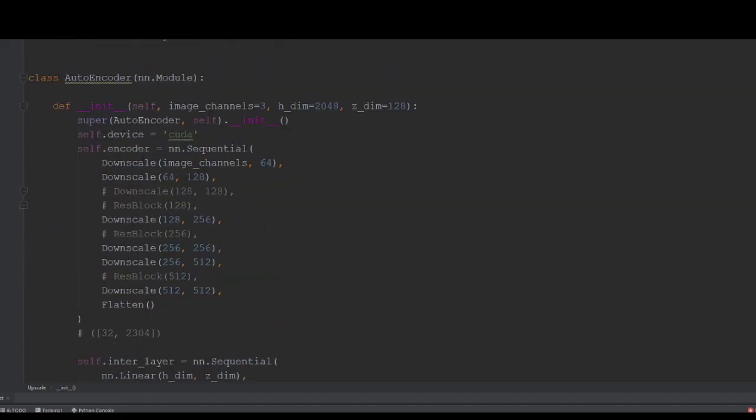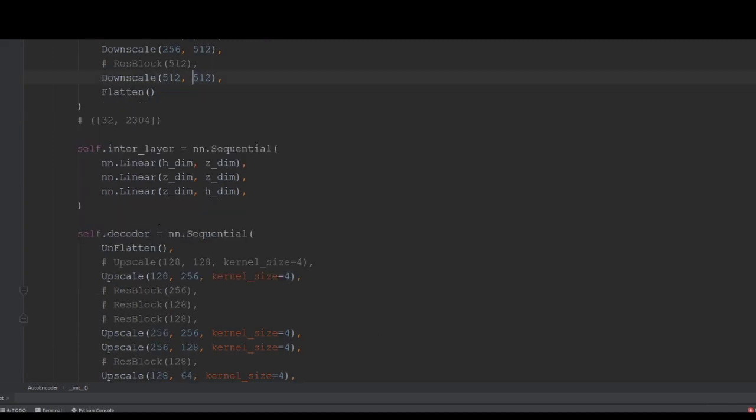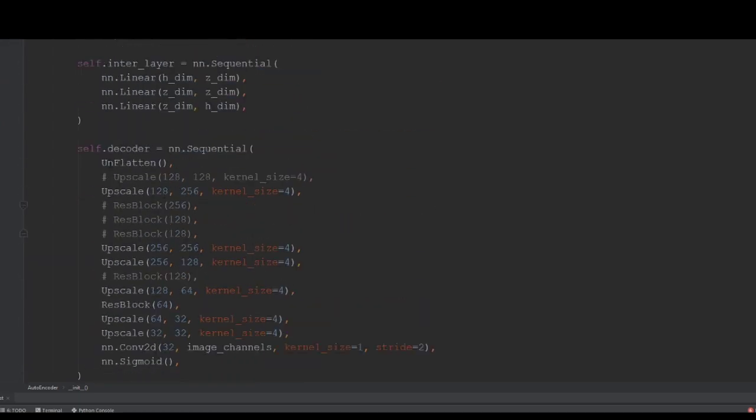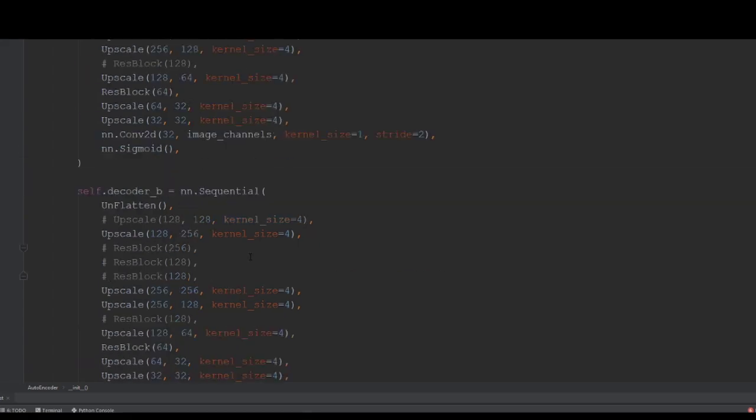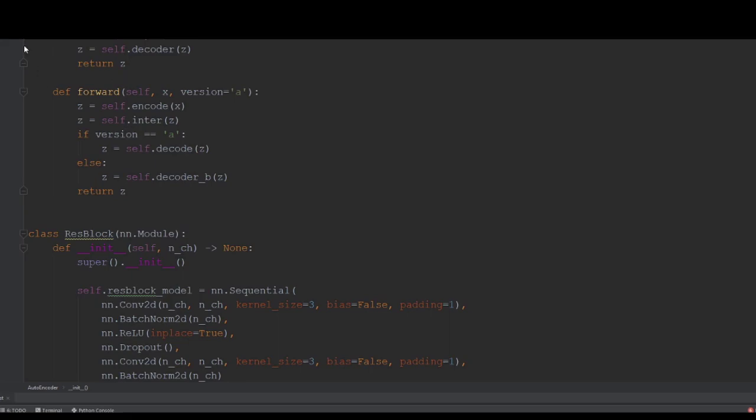Okay so if we look at all together this encoder is just going to consist of these downscale layers and then flatten it out. And then it's going to go into this inter layer which is just going to be simple fully connected layers. We're going to be using three. And then we have our two decoders that are going to be the exact same. First thing we unflatten them, put them into a square image, and then we're going to run our upscales. Now I also include these ResNet blocks. It can be used to kind of improve the quality of the output. But it's optional I guess.